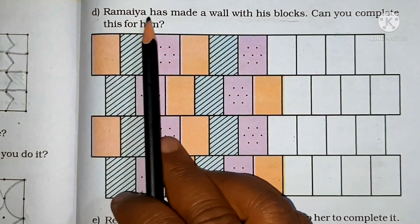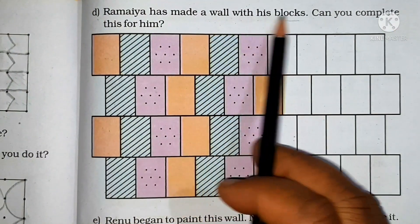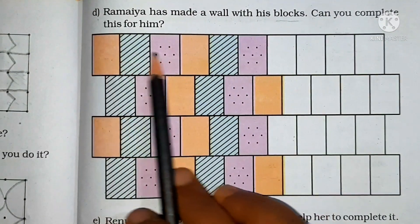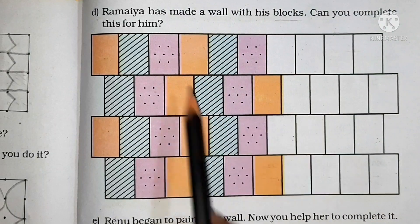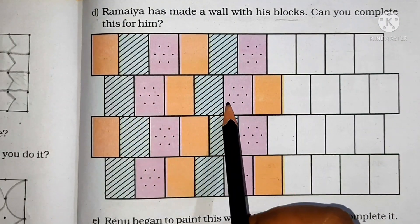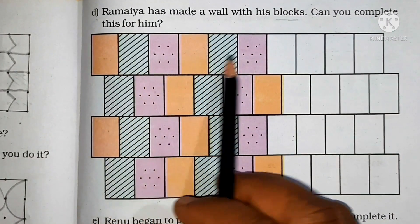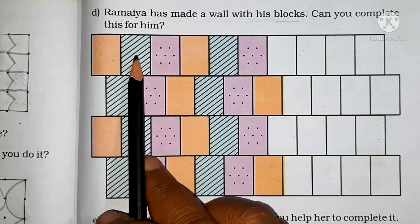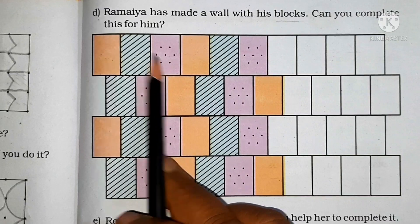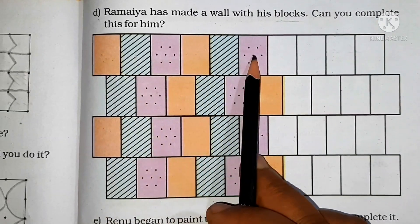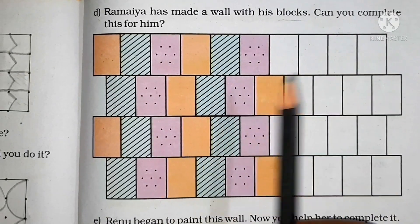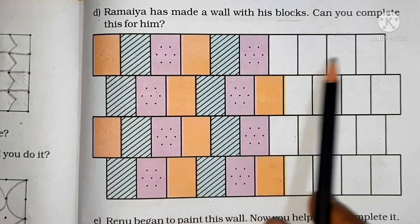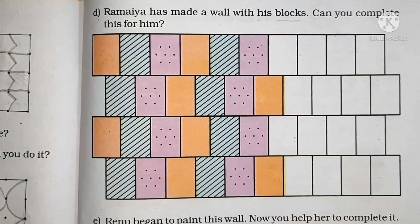Ramayya has made a wall with his blocks. Can you complete these for him? You can see it is incomplete. Let us see how we can complete it using different colors. First we can see here orange, blue, pink. So orange, blue, pink — orange, blue, pink. So definitely the next will be orange, blue, pink — following this pattern. We will put the colors in the remaining part.